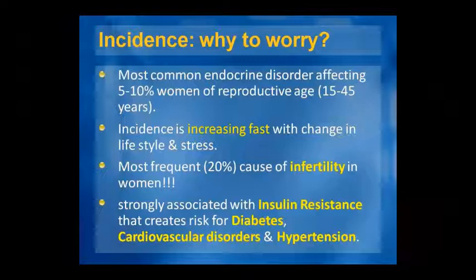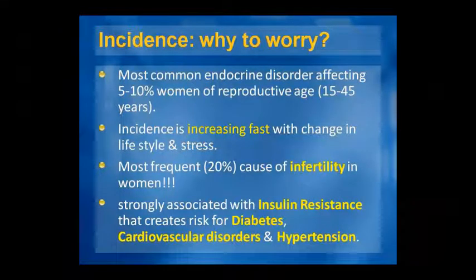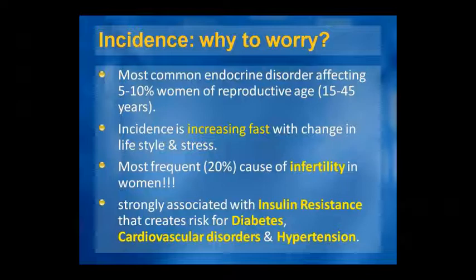Regarding incidence: PCOS is a common endocrine disorder affecting 5–10% of women in reproductive age, typically between 15–45 years. Today the incidence has increased due to lifestyle changes and increased stress. It is the most frequent cause of female infertility and is strongly associated with insulin resistance, diabetes, and hypertension.